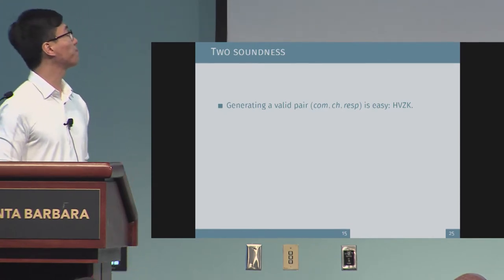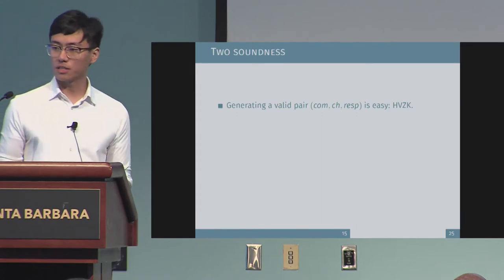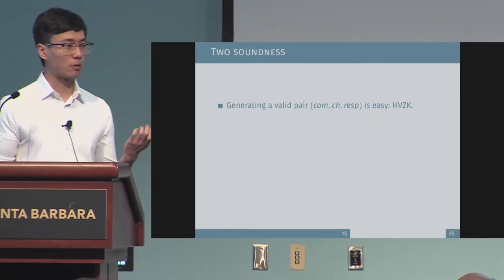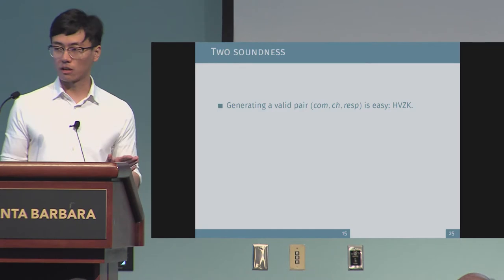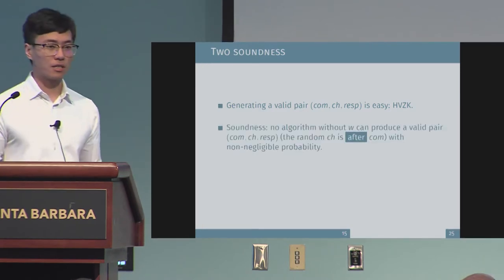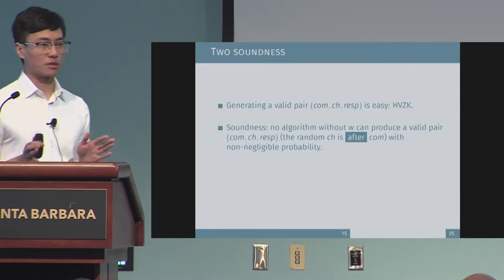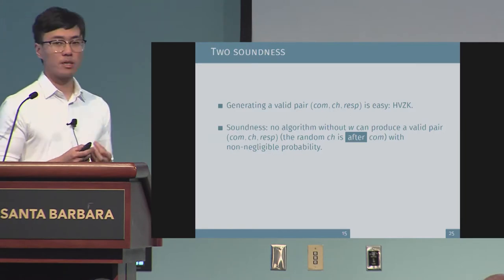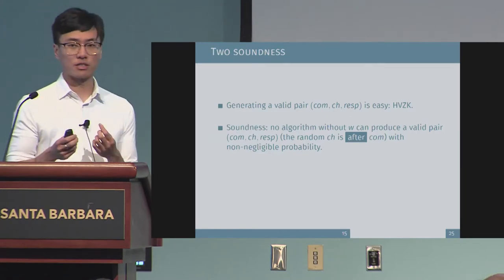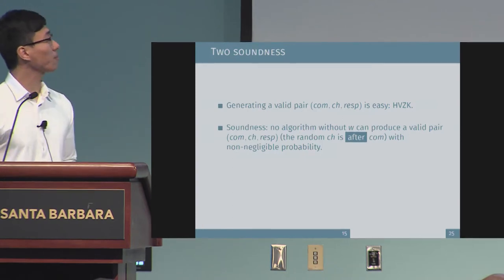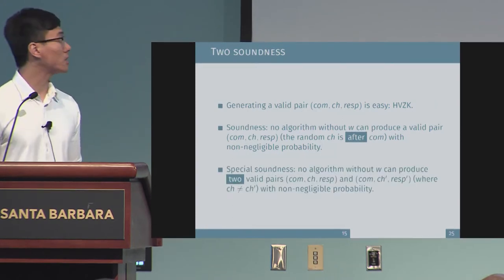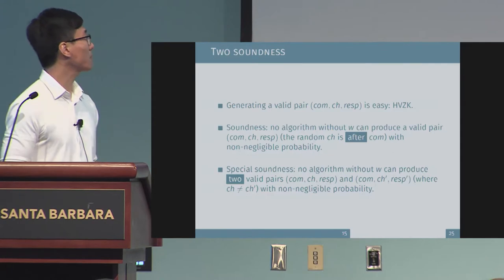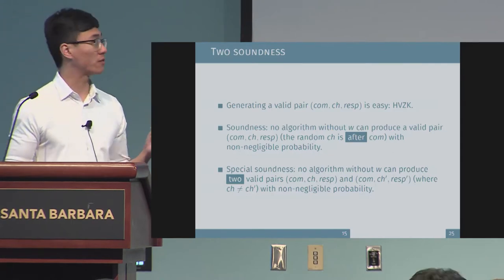Let me talk about our definition of soundness. For a Sigma protocol, it's always easy to generate a pair of transcripts with commitment, challenge, and response, because it usually satisfies honest verifier zero knowledge. For soundness here, we mean there's no algorithm without a witness that can produce a valid response after the commitment is made and a random challenge is selected after the commitment. For special soundness, there's no algorithm that can produce two valid pairs under the same commitment but with different challenges.